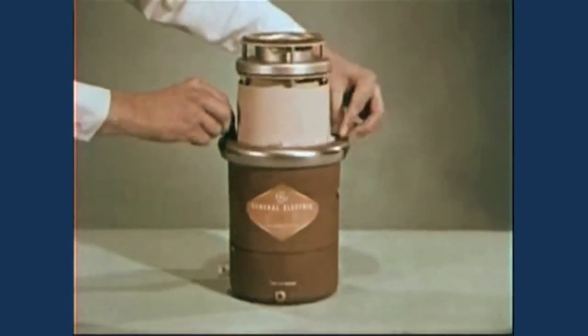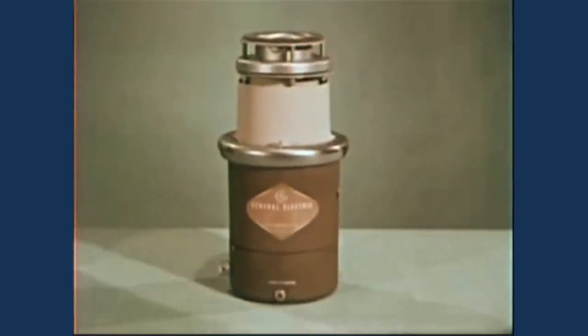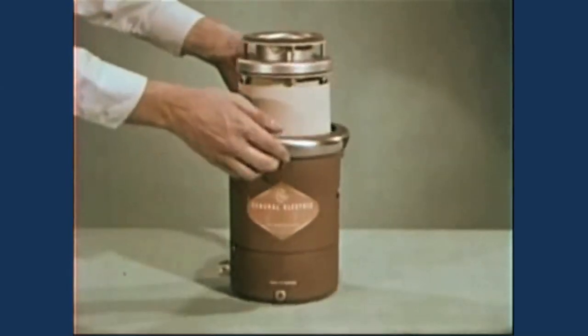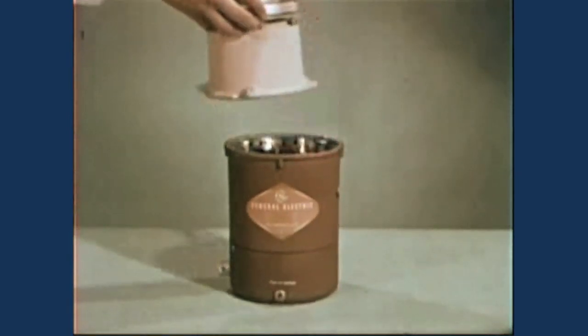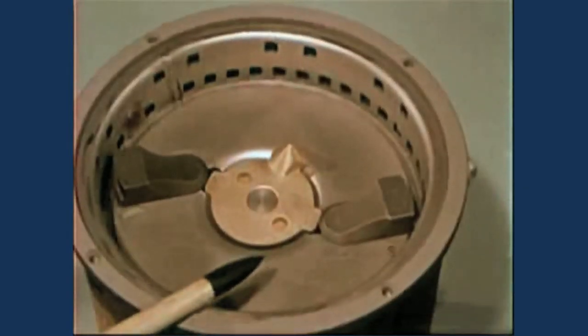And here's how all these look in the actual dispose-all unit. Dispose-all units. Under the hopper being removed now is the shredding area of the dispose-all. And in the heart of this shredding area is a stainless steel flywheel. The flywheel of stainless steel.